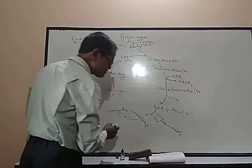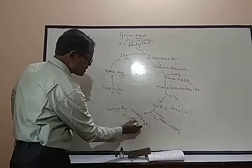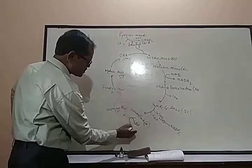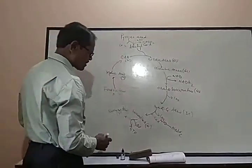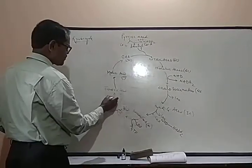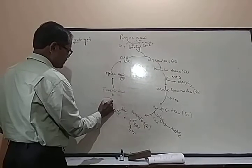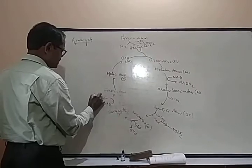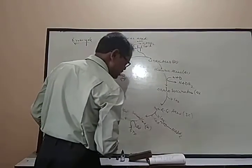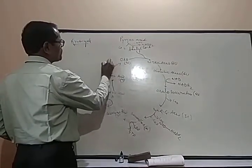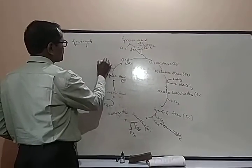During the conversion of succinyl coenzyme A to succinic acid, GDP converts into GTP. And whenever succinic acid converts into fumaric acid, at that time FAD reduces into FADH2. And malic acid, whenever converted into oxaloacetic acid, then NAD reduces into NADH2.